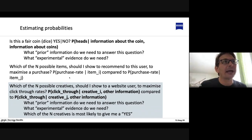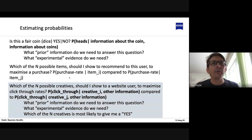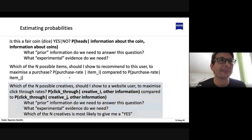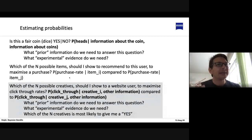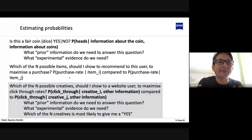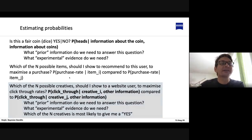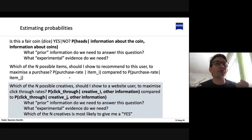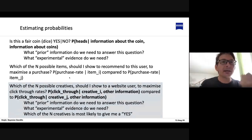Another way we'd like to estimate probabilities: imagine we want to build a recommendation engine. We have a set of n possible items we could recommend to a user, and we want to maximize some purchase. We want to estimate: what is the purchase rate for this particular item, compared to the purchase rate for a different item? And we want to show the item with the largest probability of being purchased when we make a recommendation.